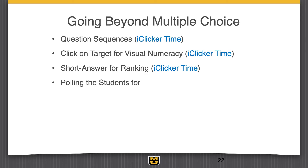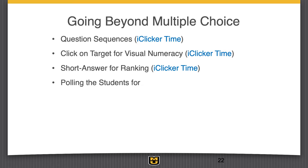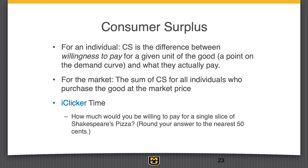What I really like iClicker for is not just these content questions — those are great — but I like to poll students just to get information, and these are freebies. They get credit as long as they answer, so students like them too, and it gets them closer to that 60 percent. I use these in a variety of ways. One is for usable data — Shakespeare's Pizza is a famous pizza place in Columbia, so sub in your favorite local pizza place. We just had lunch, but how much would you pay for a single slice of pizza from your favorite place?